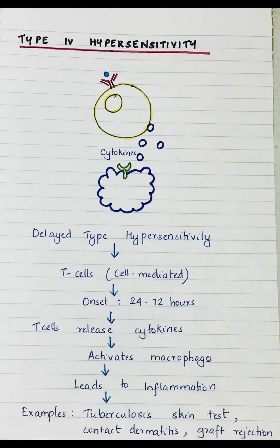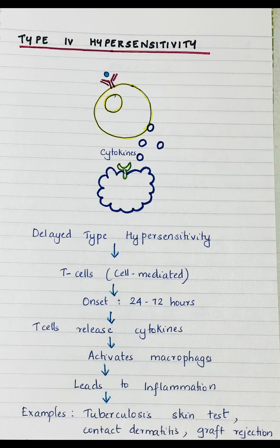Type 4 hypersensitivity reaction. It is also called delayed-type hypersensitivity, because the immune response takes 24–72 hours to develop after exposure to the antigen. This delay occurs because it is cell-mediated, meaning it is mediated by T-cells and not antibody-mediated like Types 1, 2, and 3. When an antigen enters the body, the T-cells get activated and release cytokines, which activate macrophages and lead to inflammation. Examples include the tuberculosis skin test, contact dermatitis, and graft rejection.